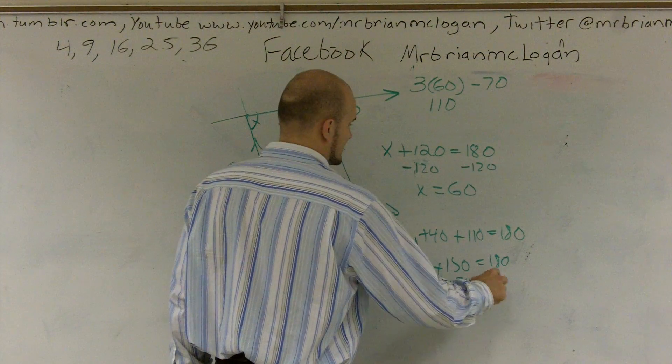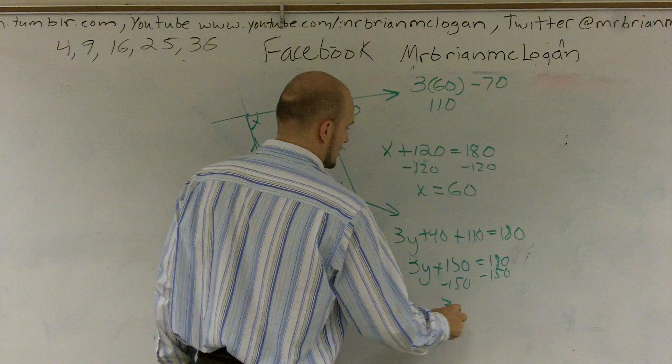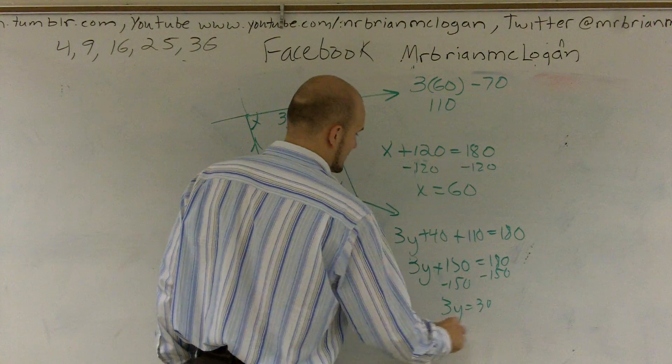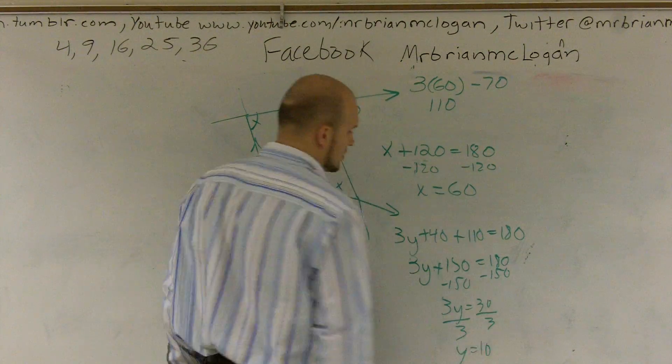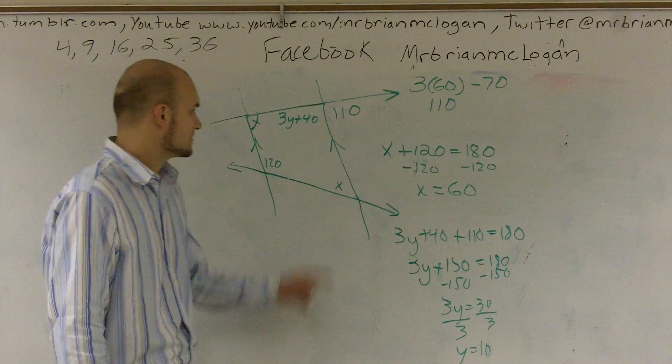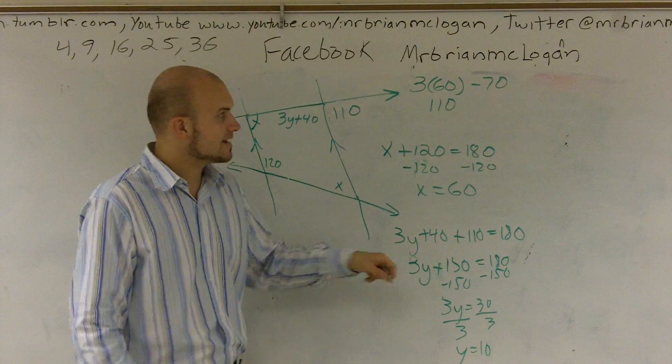Subtract 150. 3y equals 30. Divide by 3. y is equal to 10. So therefore, I've figured out what x is and what y is.